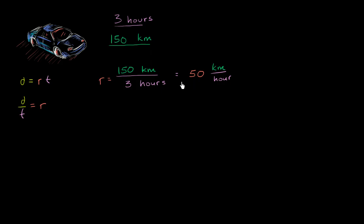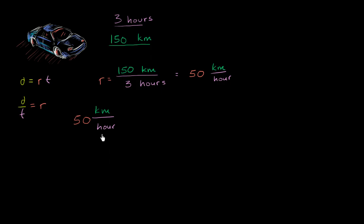Let's think about other ways to represent that. So 50 kilometers per hour — let's say we want to express it in terms of kilometers per second. How could we write 50 kilometers per hour in terms of kilometers per second? As a first approximation, think about it: if you went this far in an hour, the number of kilometers per second is going to be much less, because a second is a much shorter period of time. There are 3,600 seconds in an hour, so you'll go 1/3,600th of this distance.